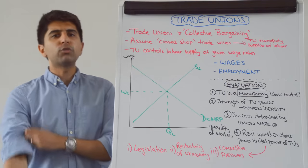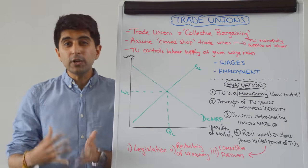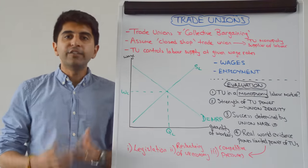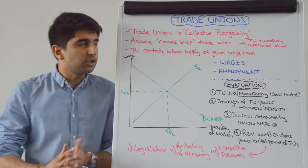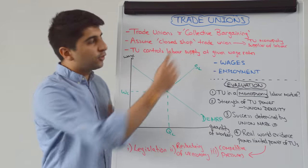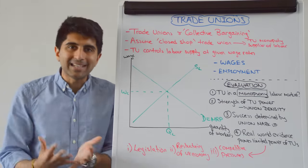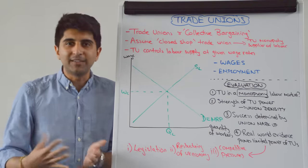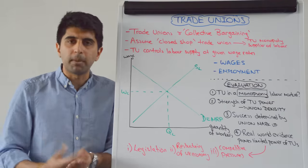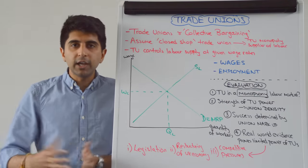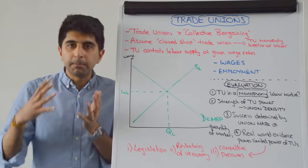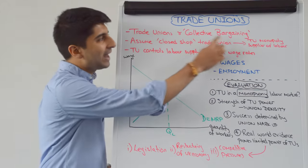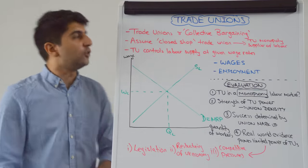Let's start by understanding what a trade union actually is. A trade union is an organisation of lots of different workers that bargain especially for higher wages, but also for better working conditions. Trade unions bargain collectively — they adopt collective bargaining. Normally individuals bargain on their own, but when workers are part of one big trade union, it can bargain on behalf of all workers for higher wages.